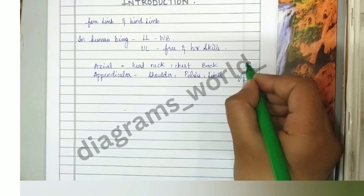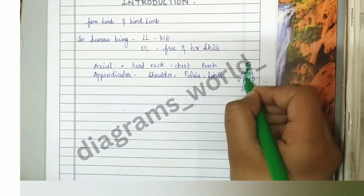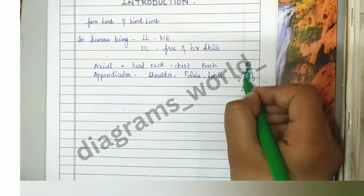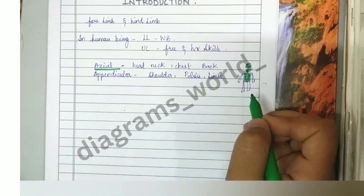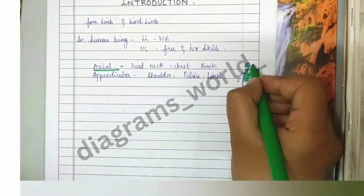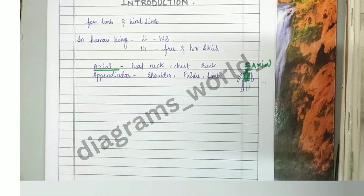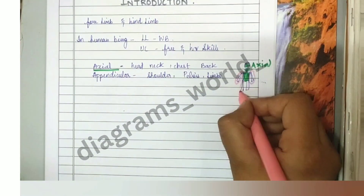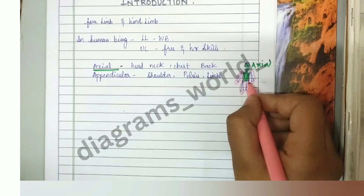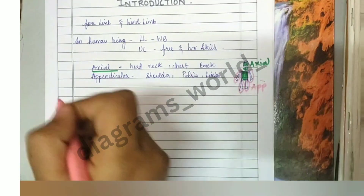Looking at the diagram, the green portion — head, neck, chest, and back — represents our axial skeleton. The remaining parts, the upper limb and lower limb, are the appendicular skeleton.